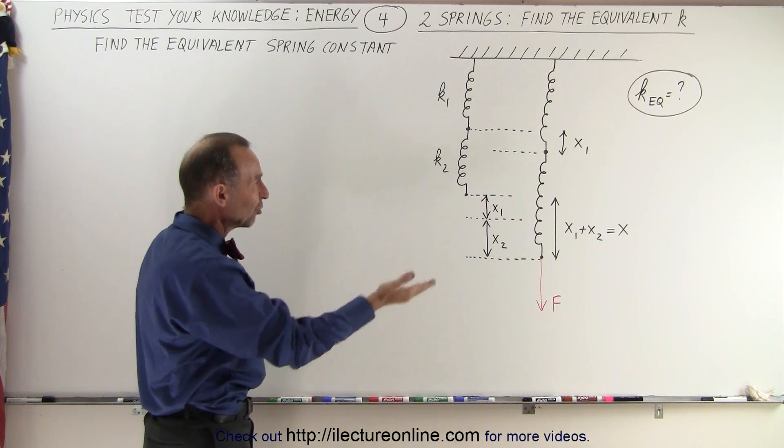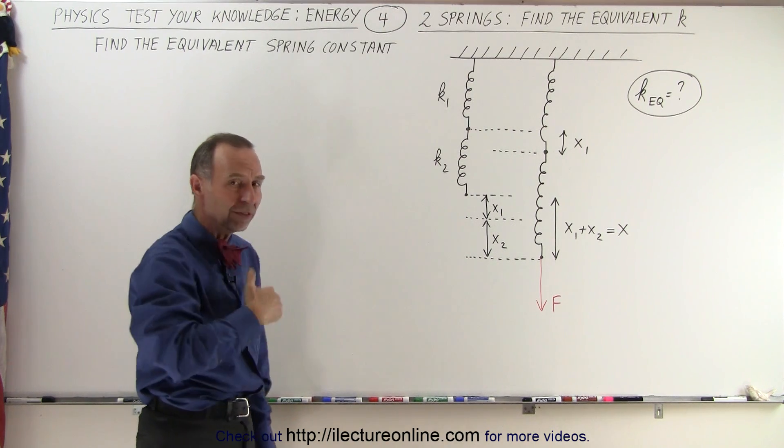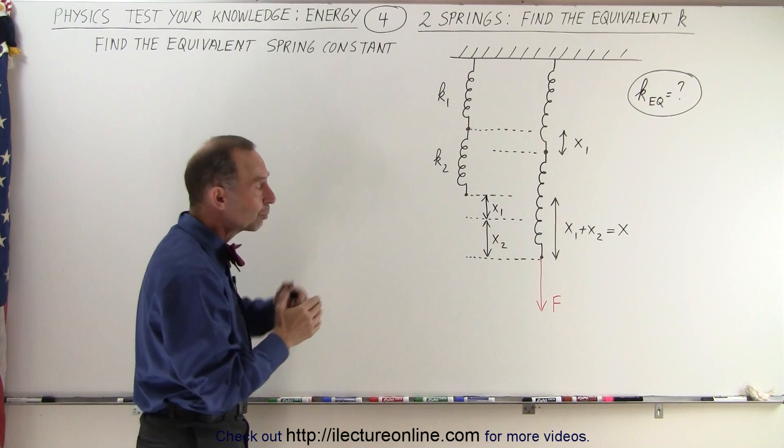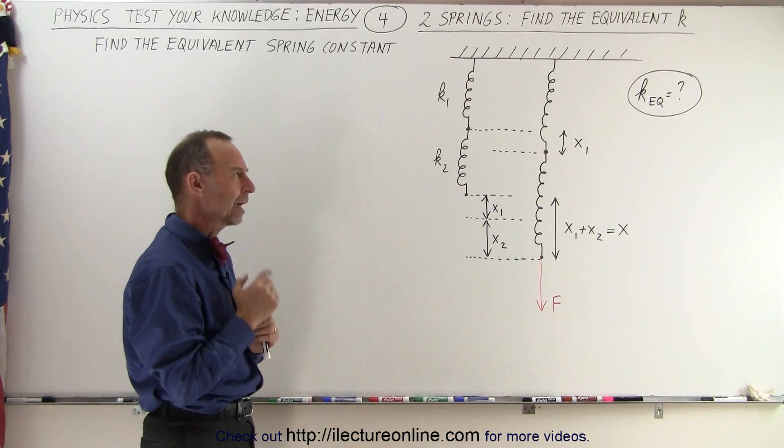What we're trying to find here is the equivalent k, the equivalent spring constant for the two springs together. How do we do that?